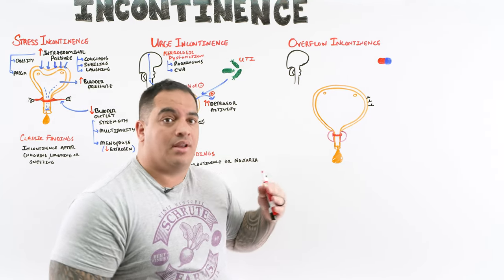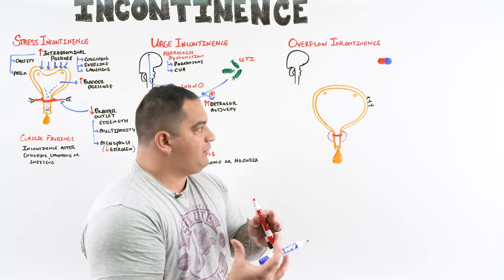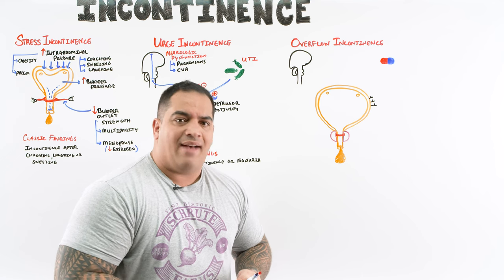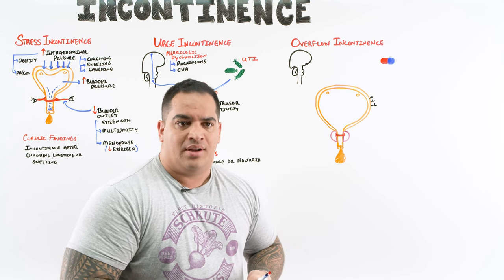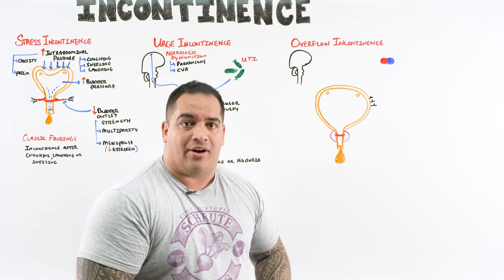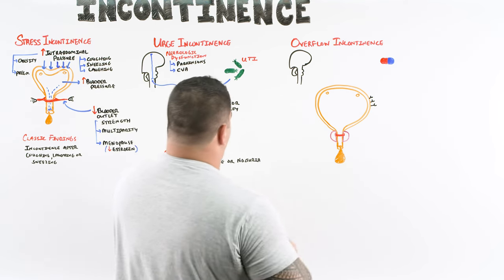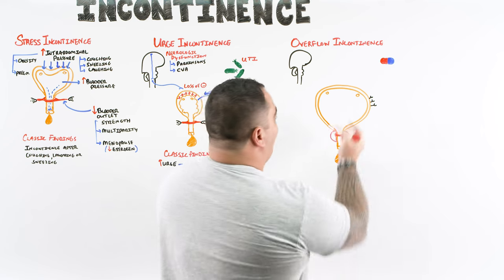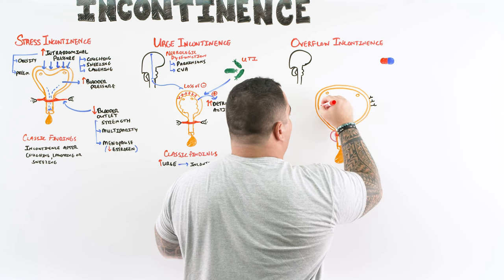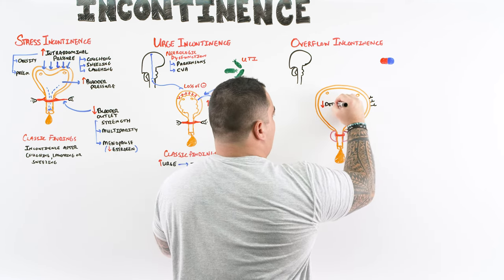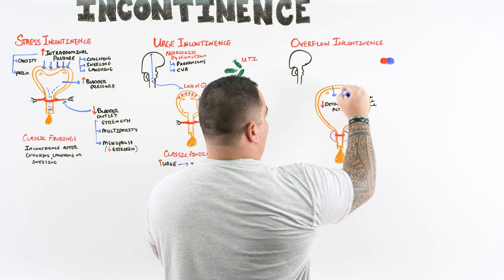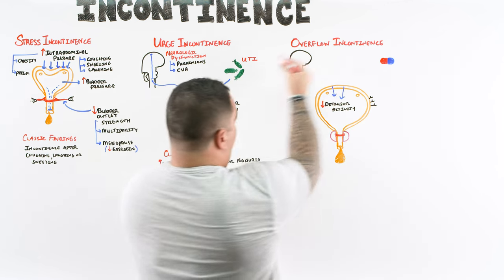The last type is overflow incontinence. The patient has incontinence in the form of a continuous dribbling — they have hesitancy, feel like they need to go to the bathroom but can't completely empty their bladder, and dribble frequently. This is the opposite of urge incontinence; the detrusor muscle is not contracting adequately — decreased detrusor muscle activity.